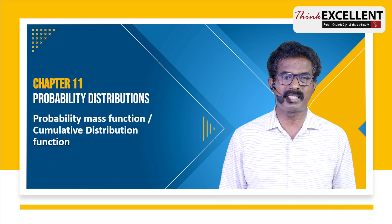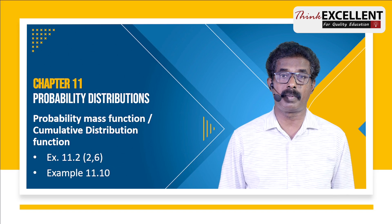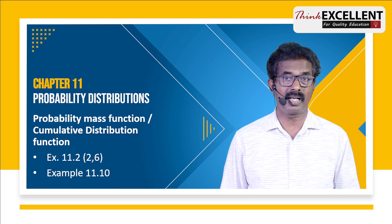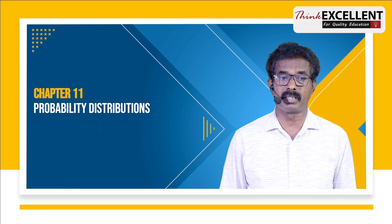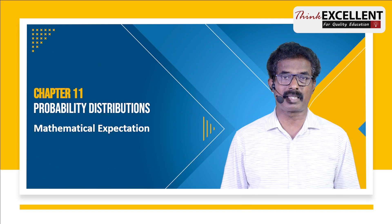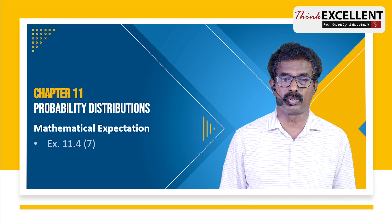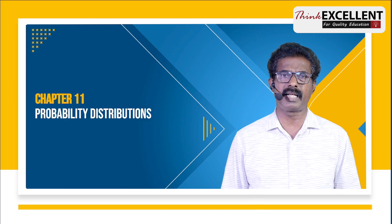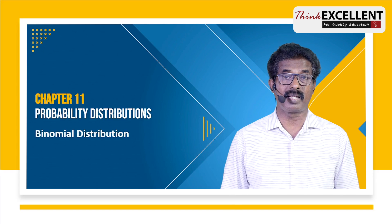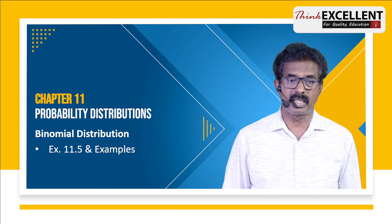Chapter 11: Probability Distribution. Very simple. First, learn the probability mass function and cumulative distribution function for discrete distributions — exercise 11.2, question numbers 2 and 6, and example 11.10, which covers finding the value of k. Then continuous distribution — exercise 11.3 and example sums. Mathematical expectation: find mean and variance. Study exercise 11.4, question 7, and example 11.18. Finally, binomial distribution — exercise 11.5 and example sums.